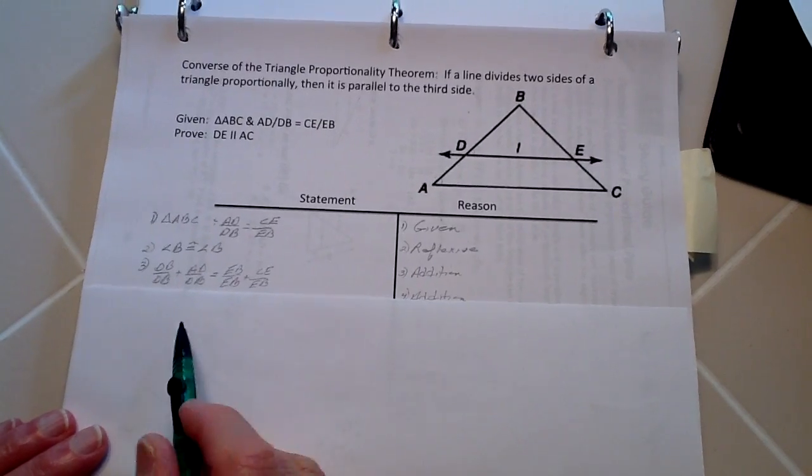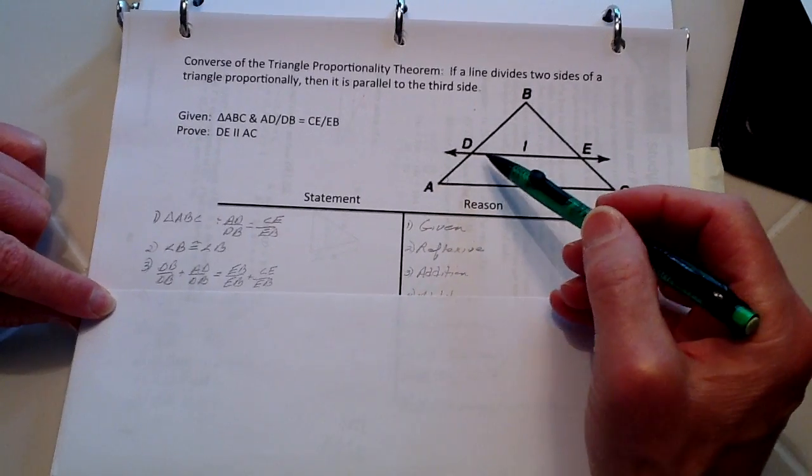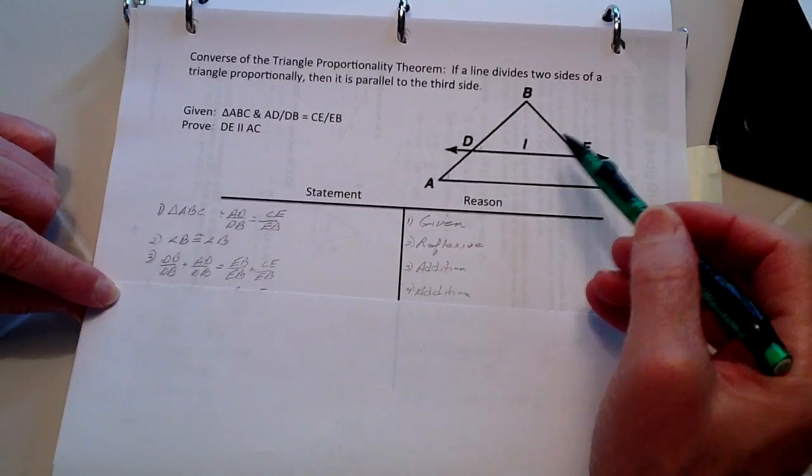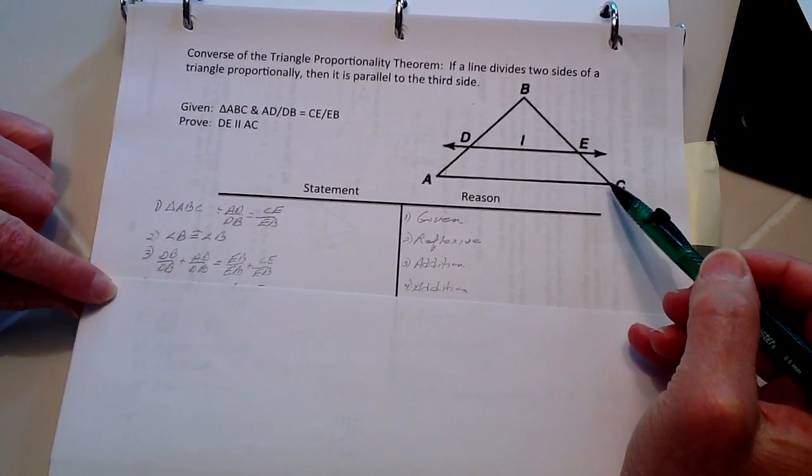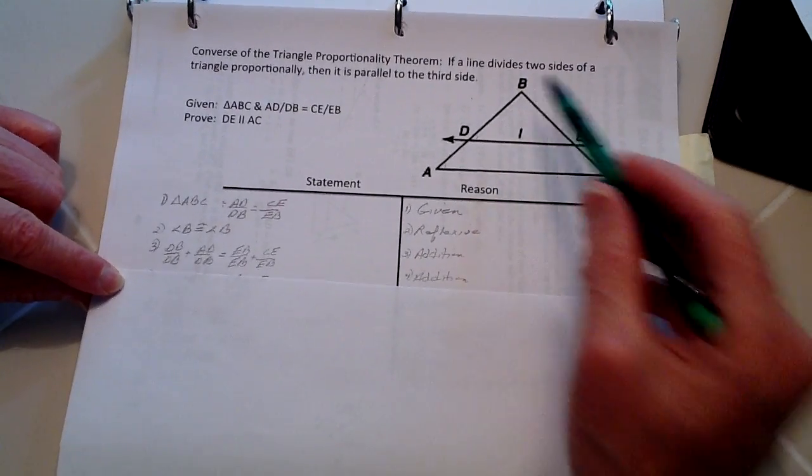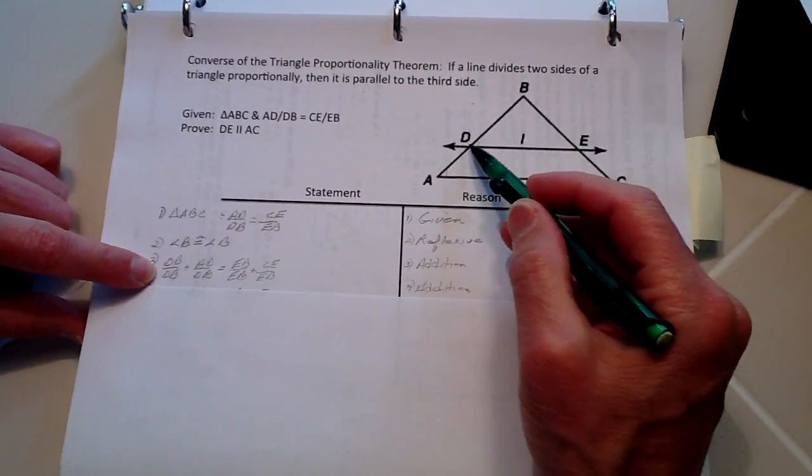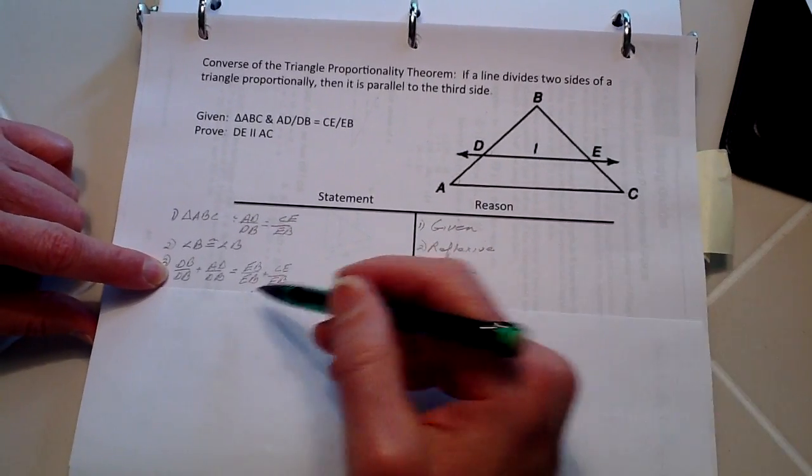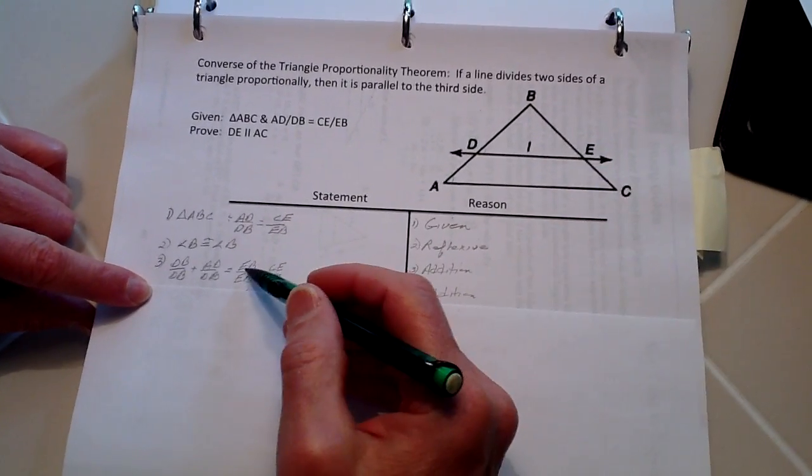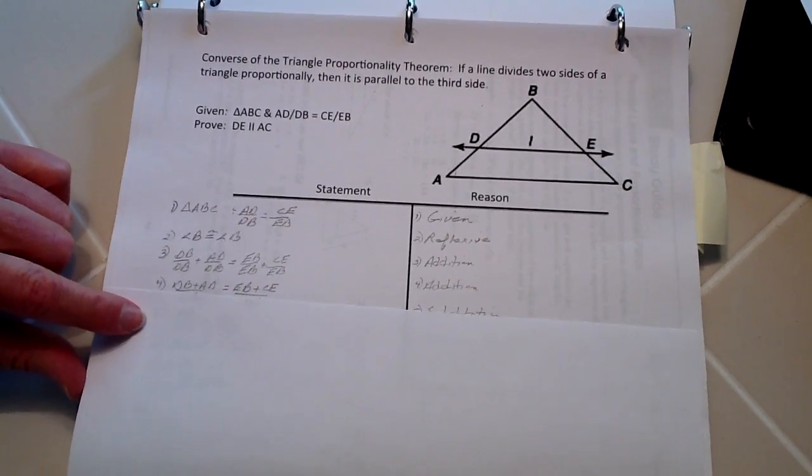And from addition now, we know that we've already been given that AD to BD, as we stated up here, is proportional, is the same proportion as CE is to EB. And what I'm doing here now is just adding 1, essentially, whenever I say DB over DB is 1. On the same side, on this side over here, I'm adding EB to EB, which is essentially 1. Therefore, I'm adding this 1 to both sides of the equation, so that's essentially addition.